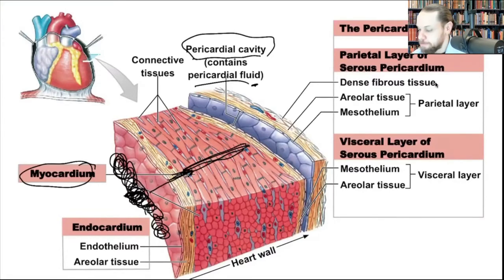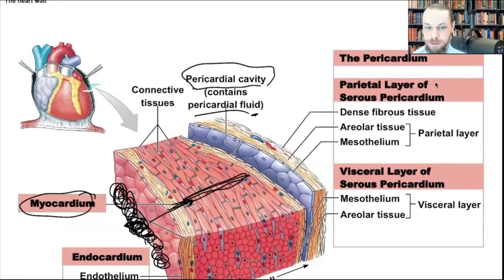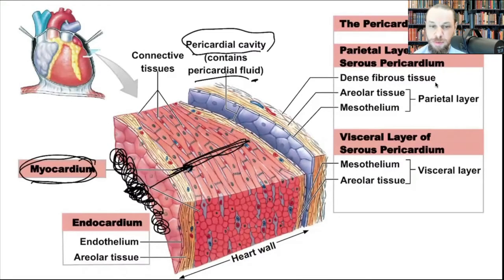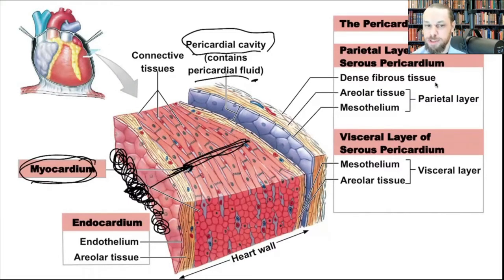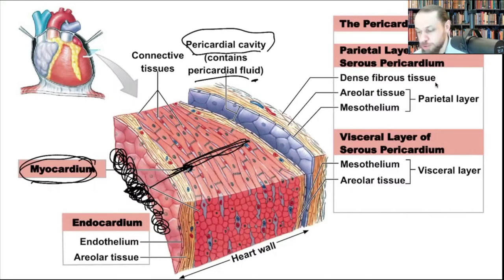The left ventricle's myocardium is much thicker than the right ventricle's because it pumps to the systemic circuit, whereas the right ventricle pumps to the pulmonary circuit. Pressure in the lungs is much less than in the aorta, so you don't need as much tissue size for the right side. The left side needs that size to facilitate systemic pumping.